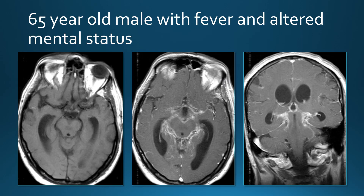This is a 65-year-old man with fever and altered mental status. We see extensive leptomeningeal enhancement along the midbrain and in the suprasellar cistern. This patient also has mild hydrocephalus. This is a patient with tuberculous meningitis.